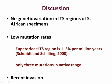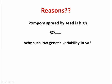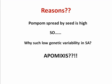This may be due to low mutation rates. A study by Smith and Schilling tells us that the ITS region mutates at a rate of 1–2% per million years, and this is evidenced by the fact that we only found three mutations in the native range. This confirms the fact that Pong Pong weed is a very recent invasion that has not had time to accumulate mutations detectable by the ITS marker. We are therefore asking why there is such low genetic variability in a weed that spreads so prolifically by seed.